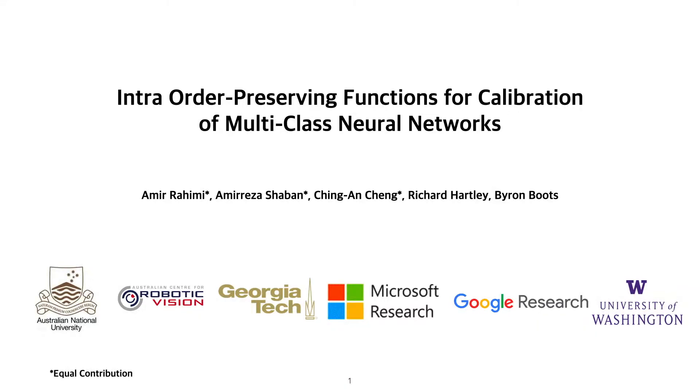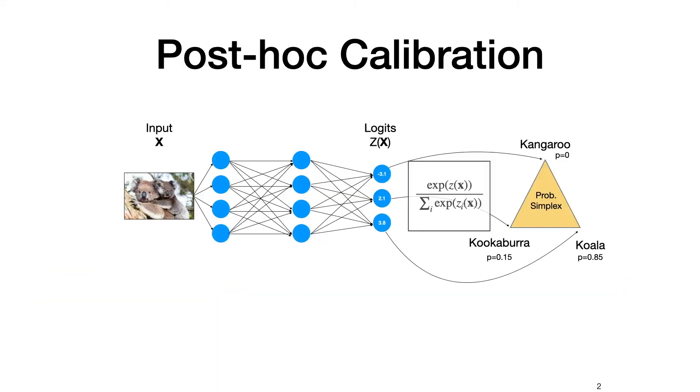Intra-order preserving functions for calibration of multi-class neural networks. It is known that most modern neural networks don't have calibrated confidence scores, meaning that the confidence score they assign to an event does not match the true frequency of that event.